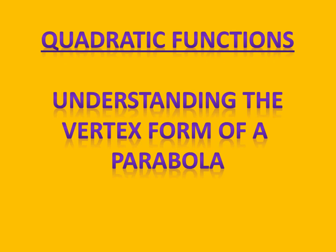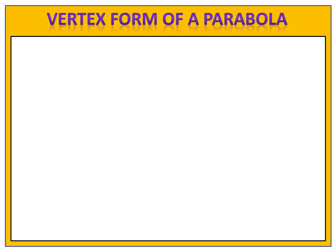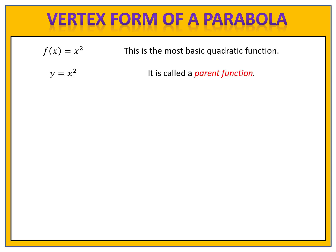In this lesson, we're going to work to understand the vertex form of a parabola. Let's begin by looking at the most basic quadratic function that there is: f of x equals x squared, or if you prefer, y equals x squared. This is the most basic quadratic function, and it's called a parent function.